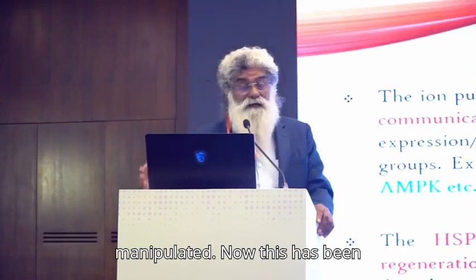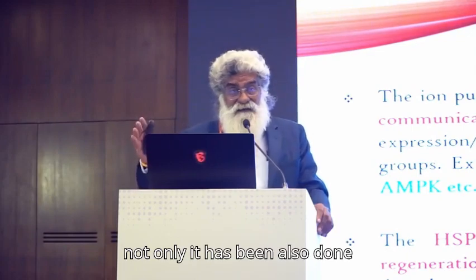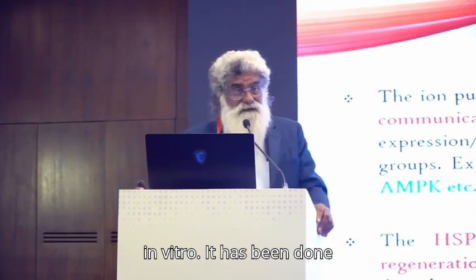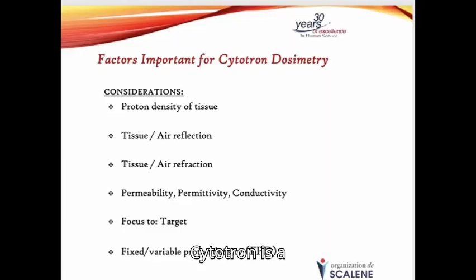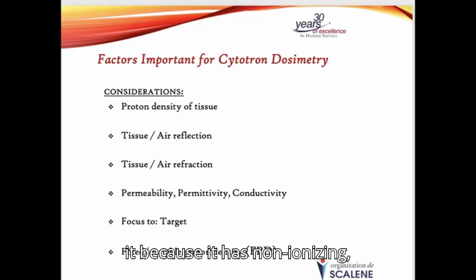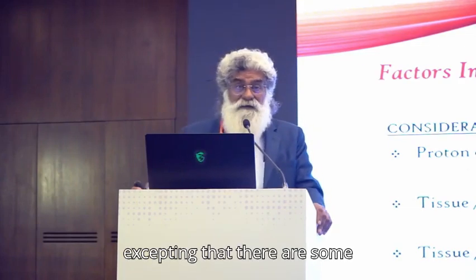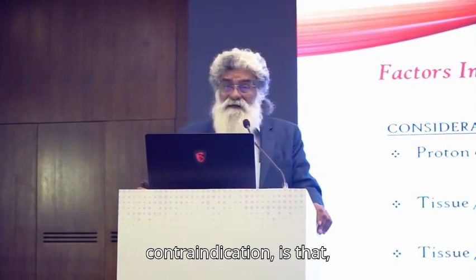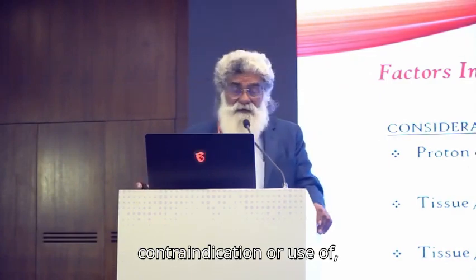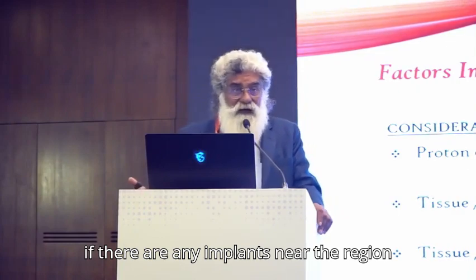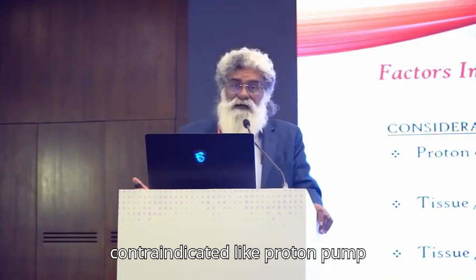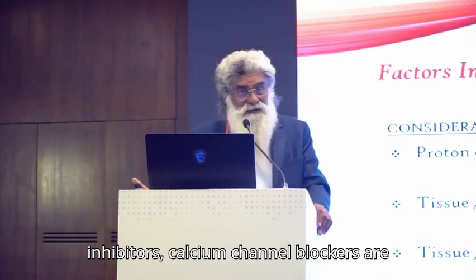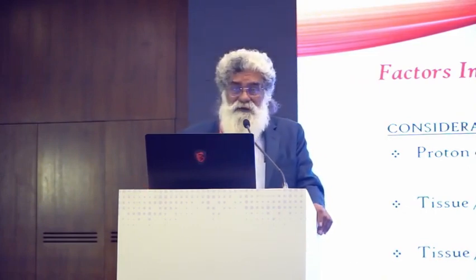This has been done not only in vivo but also in vitro, to understand the effect of FRBs on these proteins. Cytotron is a very simple way of using it, because it has non-ionizing, non-thermal radiation. Accepting that, there are some contraindications: use of pacemakers is a contraindication, or if the patient has any implants near the region of interest, that is also a contraindication. Certain drugs are also contraindicated, like calcium channel blockers. If the patient is infected with HIV or a virus, that is a contraindication, because the disease progresses faster.